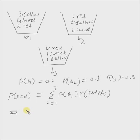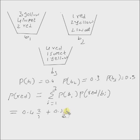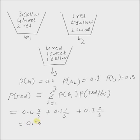This equals P(basket 1) = 0.4 multiplied by 2/9, plus P(basket 2) = 0.3 multiplied by 1/5, plus P(basket 3) = 0.3 multiplied by 4/6, which is 2/3. This sum evaluates to 0.3489. Hence the probability of choosing a red potato from any of the baskets, defined by the sum rule of probability, is 0.3489.